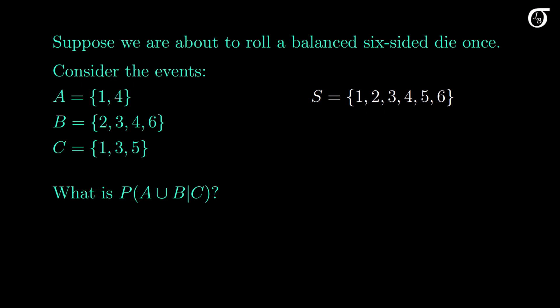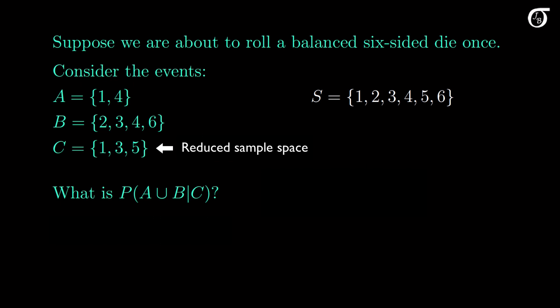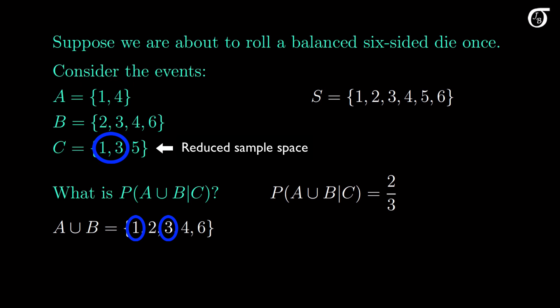I'm going to work through this question using the reduced sample space argument. If we are given that C has occurred, that reduces our sample space down to just C — just the numbers 1, 3, and 5. A union B is made up of all sample points in either A or B, so that union is made up of the numbers 1, 2, 3, 4, and 6. The three sample points in C are equally likely, and of those three, two of them — the numbers 1 and 3 — are also contained in A union B. So the probability of A union B given C is 2/3.